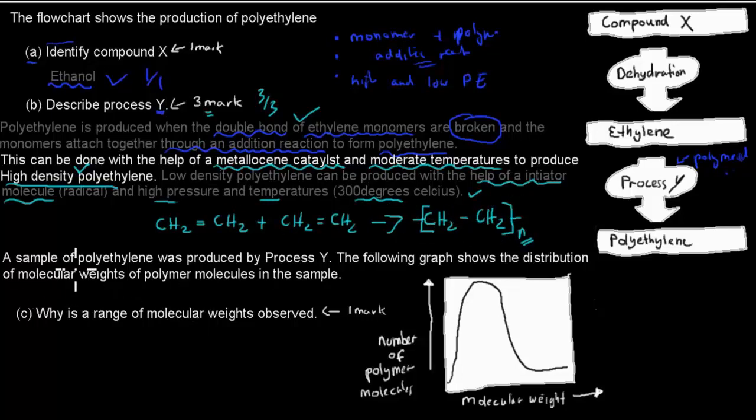So for the next part, a sample of polyethylene was produced by process Y. The following graph shows the distribution of molecular weights of polymer molecules in the sample. And that was worth, so the question is, why is the range of molecular weights observed? So why is it not just, why aren't they all the same weight? Why is there difference in weights when it comes to these chains? And that's worth one mark, so a really quick answer.